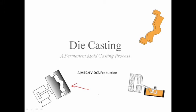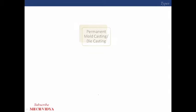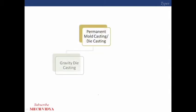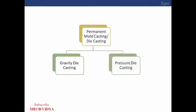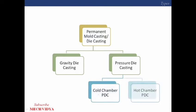If we talk about the types of mold casting, we have different varieties. Permanent mold casting can be grouped under two heads: the first is gravity die casting and the second is pressure die casting. Under pressure die casting, you will have two types: cold chamber pressure die casting and hot chamber pressure die casting.